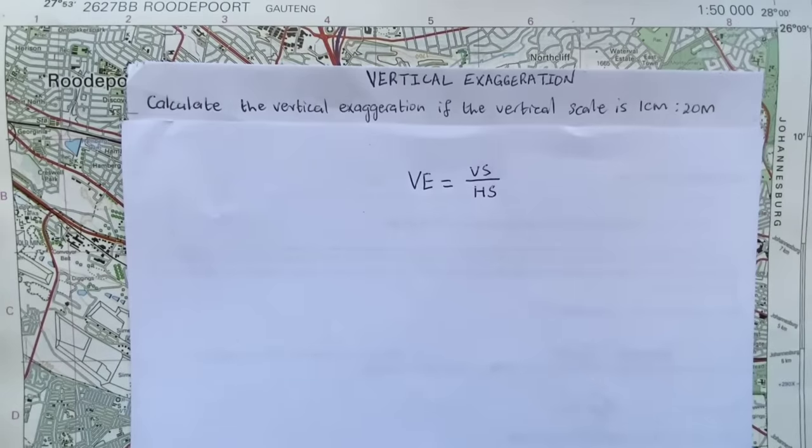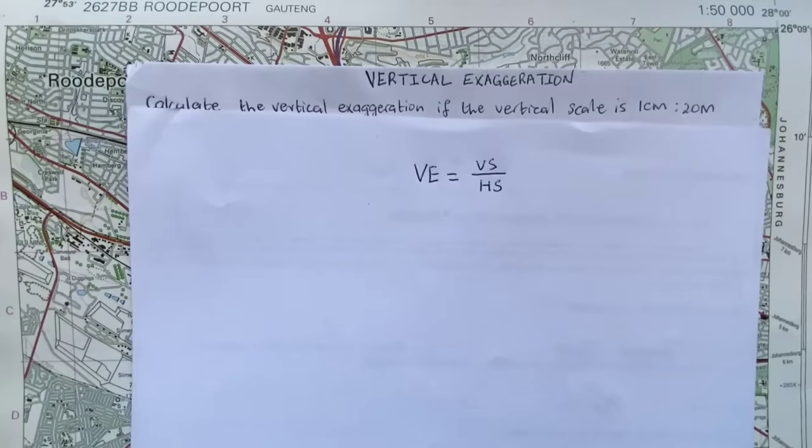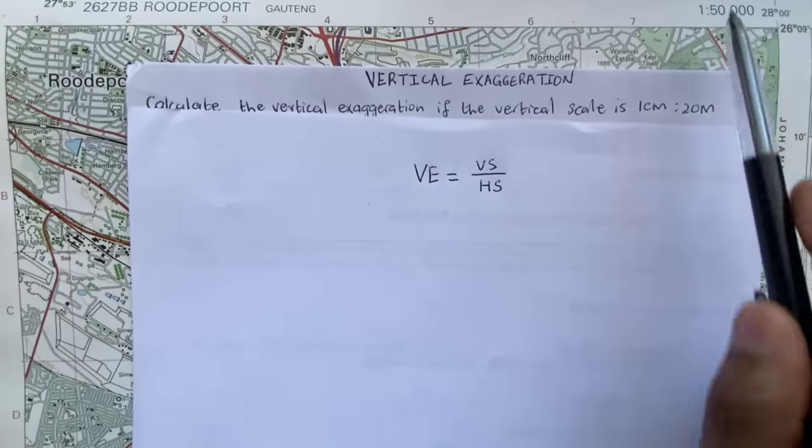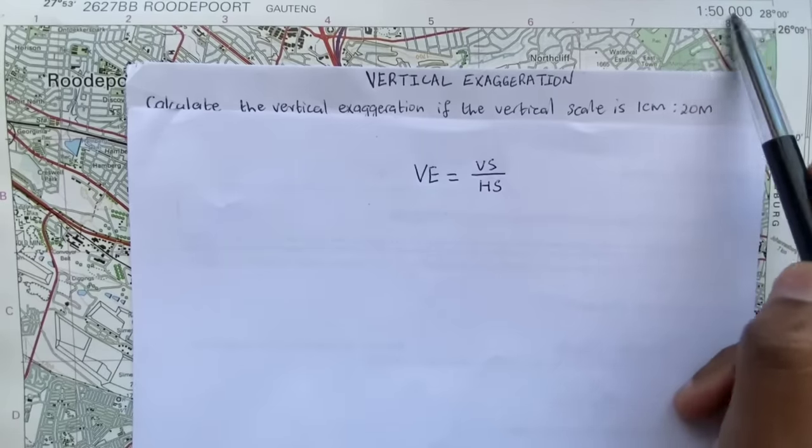As it's shown there, one is to 50,000 in centimeters. So let's try to work the solution for this question. Before we work out the solution, please note that your horizontal distance is dependent on the type of map that you are using. For instance, I'm using a topographic map here whereby the scale is 1:50,000.